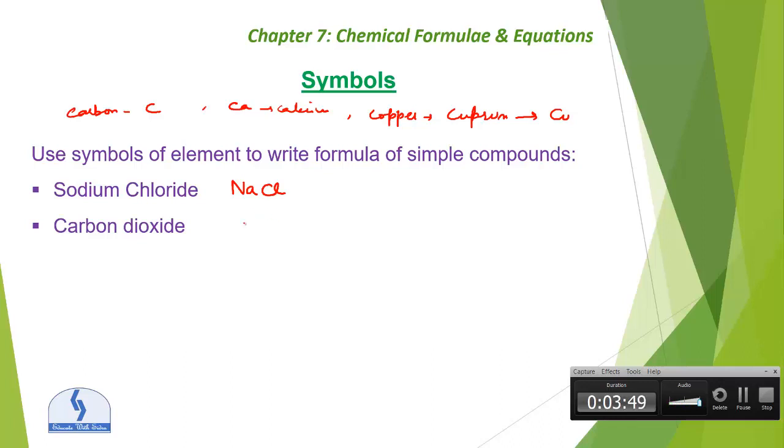Okay, next is carbon dioxide. Carbon has a symbol of C and oxide has a symbol of O, right? But here we are seeing that it is dioxide. Di means 2, so that will be O2. The 2 comes with the oxygen because it is dioxide.